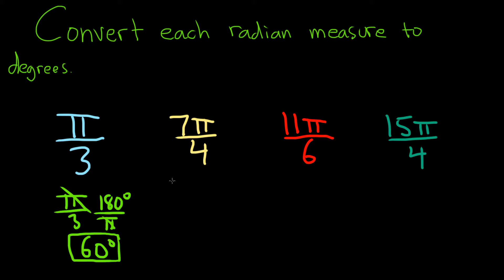For the next one, it's very similar. We're going to take 7 pi over 4 and multiply it by 180 degrees over pi. The pi's cancel.